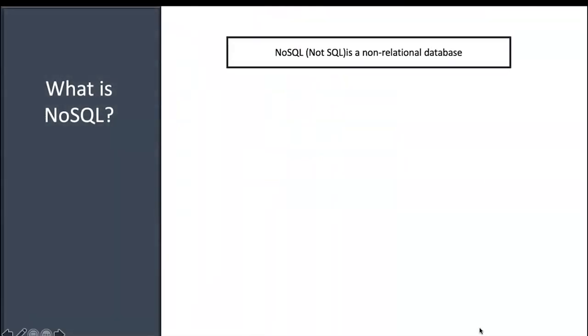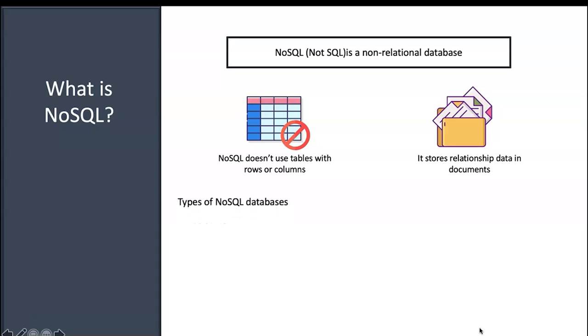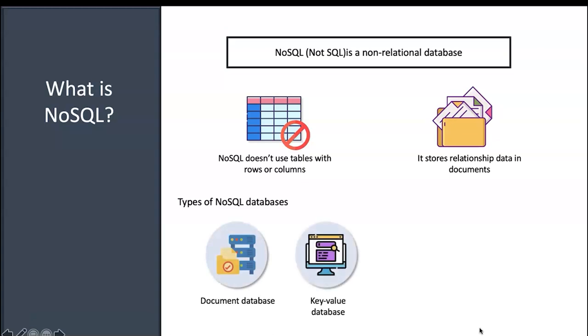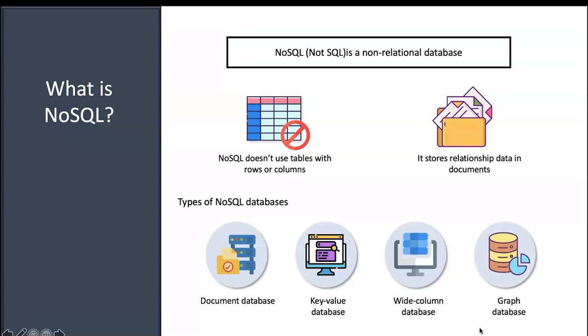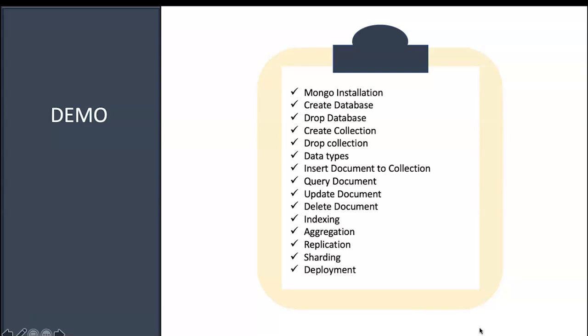NoSQL is completely a non-relational database. Unlike traditional RDBMS which uses tables with rows and columns, NoSQL stores relationship data in documents. Different types of NoSQL databases are available: document-based, key-value based, wide-column based, and graph-based. MongoDB is a purely document-based database. Now we'll go ahead with some demonstrations on how MongoDB installation works and other aspects.